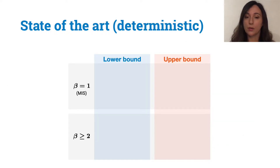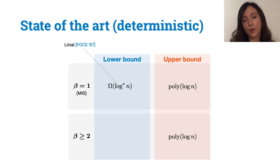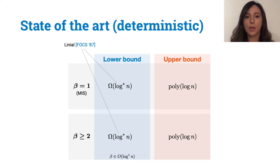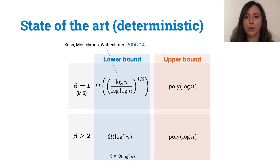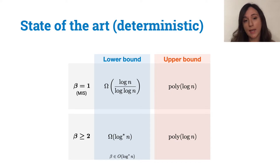Let us now see what was known prior to our work regarding 2-beta ruling sets, starting with deterministic algorithms. On the upper bound side, due to a very recent breakthrough from Rojan and Ghaffari, we know that 2-beta ruling sets can be solved in polylogarithmic deterministic rounds. On the lower bound side, we knew since the late 80s that MIS requires omega of log star n rounds. In 2014, Kuhn, Moshibroda and Wattenhofer showed a lower bound for the MIS problem of omega of square root of log n over log log n. Recently, together with Brandt, Hirvonen, Olivetti, Rabi and Suomela, we improved this lower bound to log n over log log n. This was the state of the art for deterministic solutions of 2-beta ruling sets prior to our work.